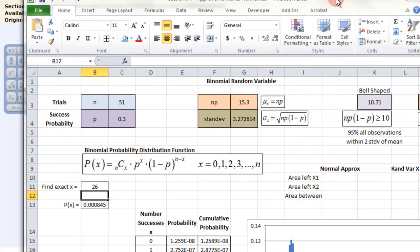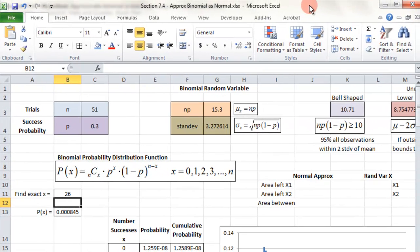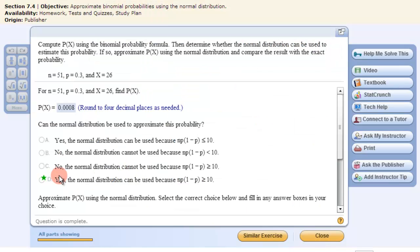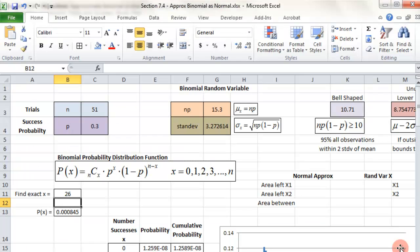Now we want to use the normal approximation. If I look down here, it first says can I use a normal approximation? I already have that installed here. It says n times p times 1 minus p has to be greater than or equal to 10. With my information in here, it calculates that already for me: 10.71. Yes, we can use a normal approximation on this data.